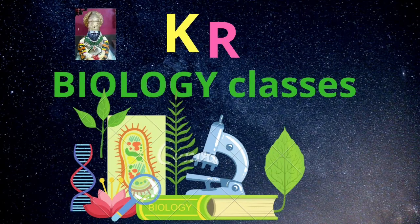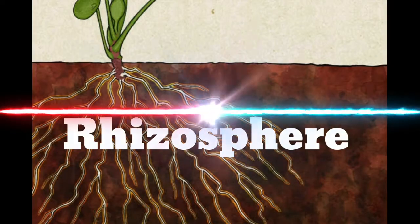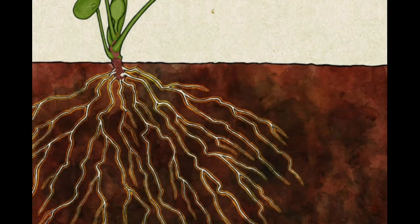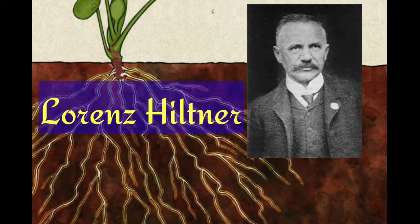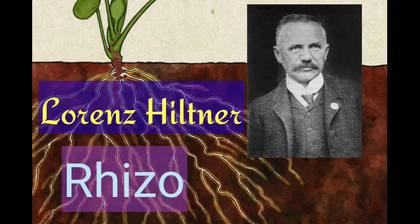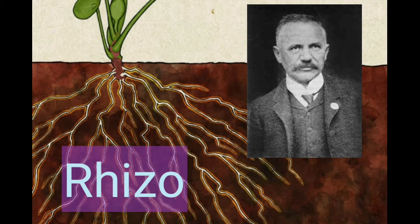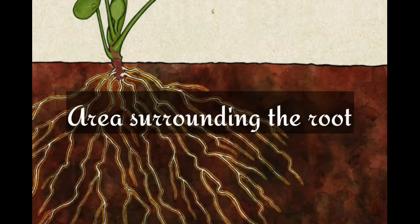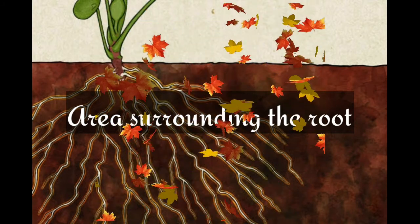Welcome back to the KR Biology Classes. Today the class is on the rhizosphere. The term rhizosphere was first coined by scientist Lawrence Hiltner, who is a great physiologist. According to him, rhizosphere means the area surrounding the root which is inhabited by a unique microbial population.